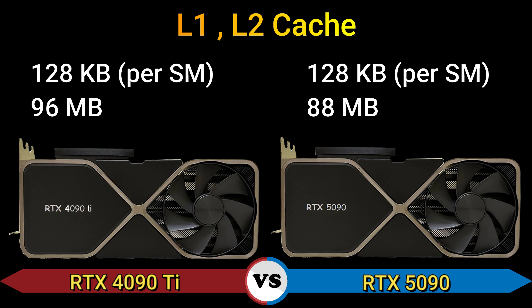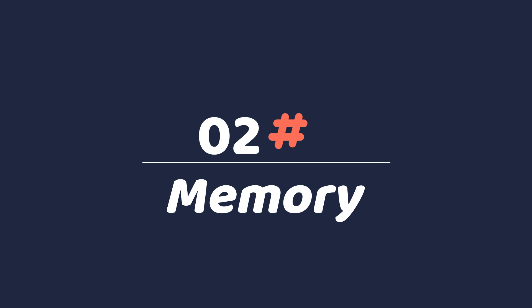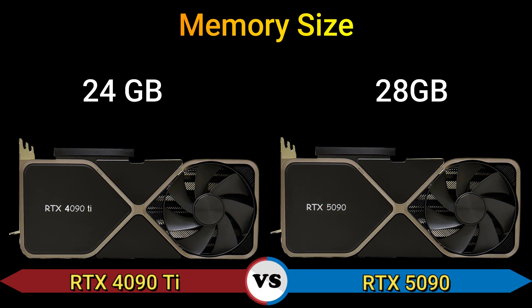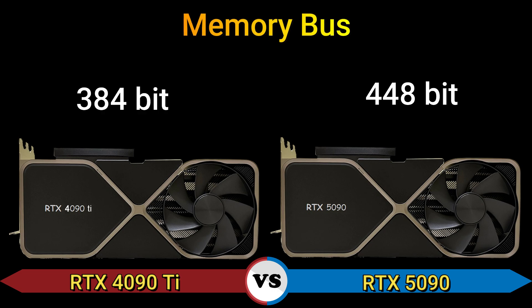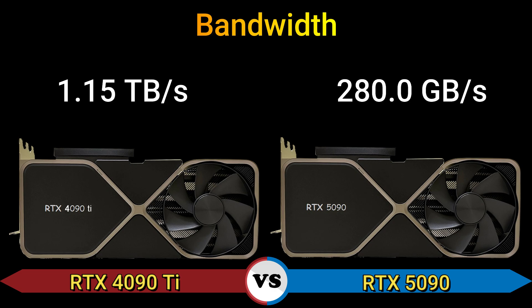L2 cache: 128 KB / 96 MB and 128 KB / 88 MB. Part 2 — Memory. Memory size: 24 GB and 28 GB. Memory type: GDDR6X and GDDR7. Memory bus: 384-bit and 448-bit.